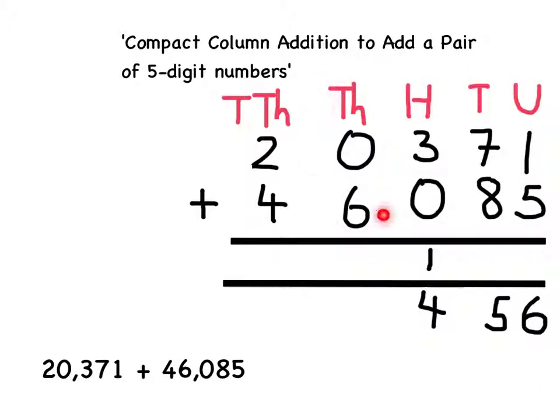Now I've got to add up the thousands, these two numbers here. These are 0 thousands and 6 thousand. Added together this makes 6 thousand which I can show by writing a 6 at the bottom of the thousands column.